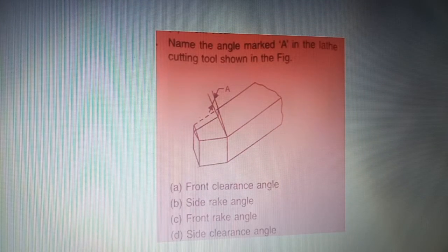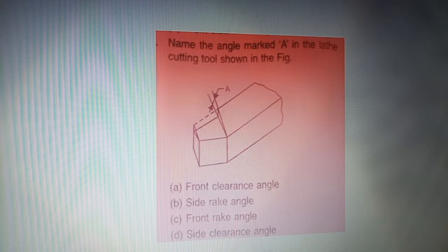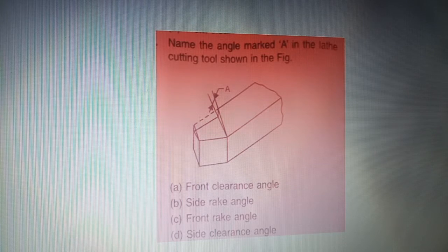Next question: name the angle marked A in the lathe cutting tool shown in the figure — four options are given on your screen. The correct answer is option B — side rack angle.